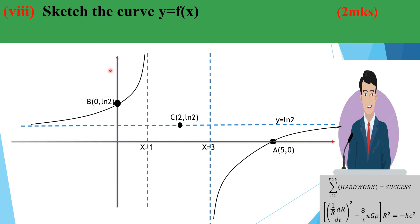To sketch the curve, first draw the y and x axes and indicate all asymptotes. Mark the intercept points. As x → +∞ and x → -∞, the graph approaches y = ln(2). As x → 1⁻, the graph rises to +∞. As x → 3⁺, the graph falls to -∞. Using these guides — asymptotes, intercepts, and concavity — the full sketch follows naturally.